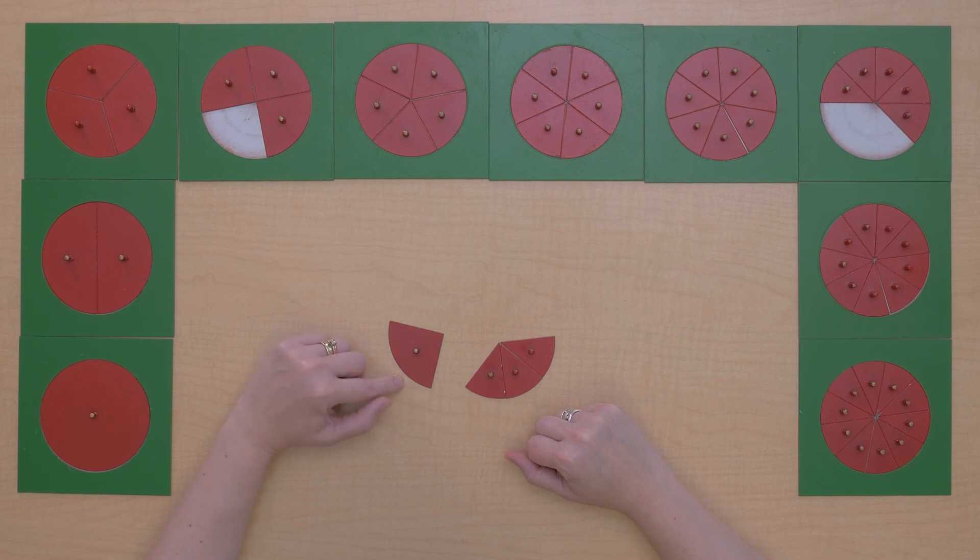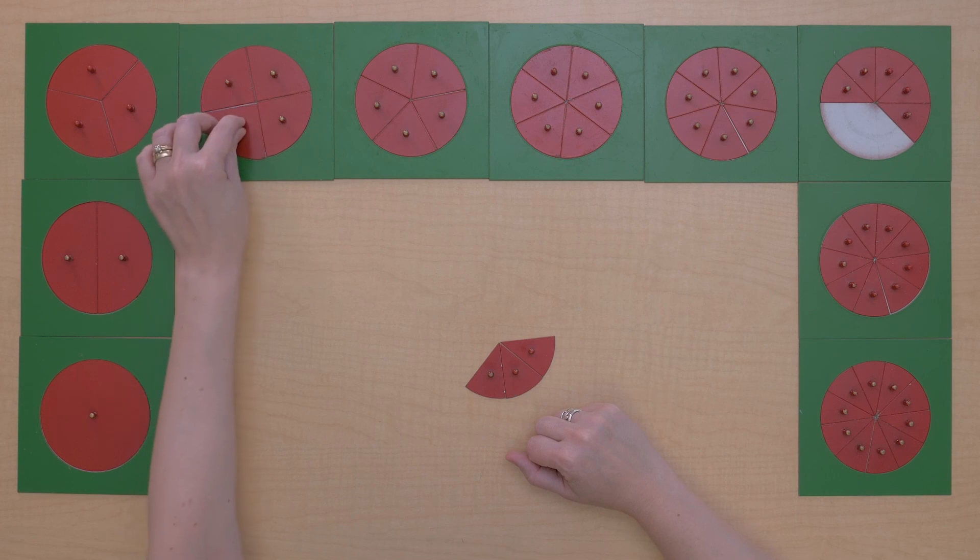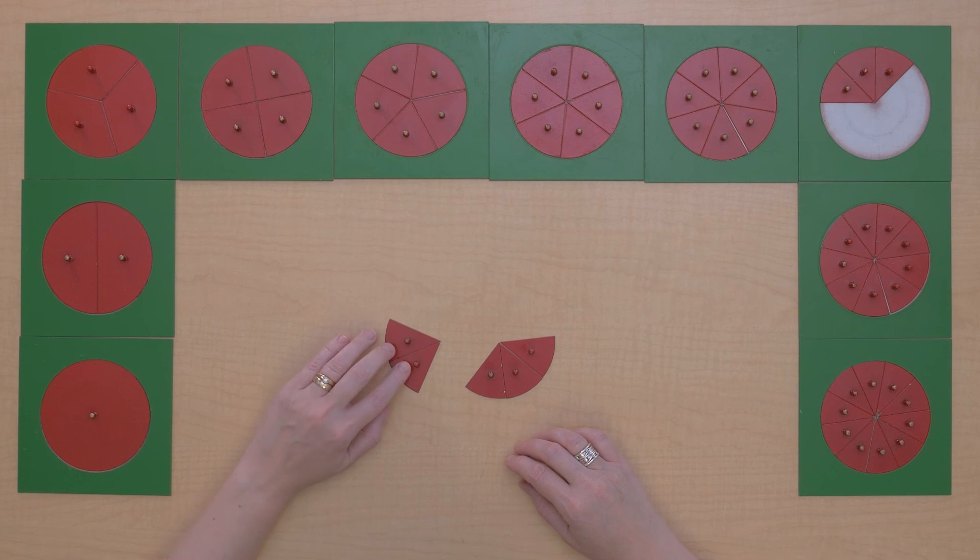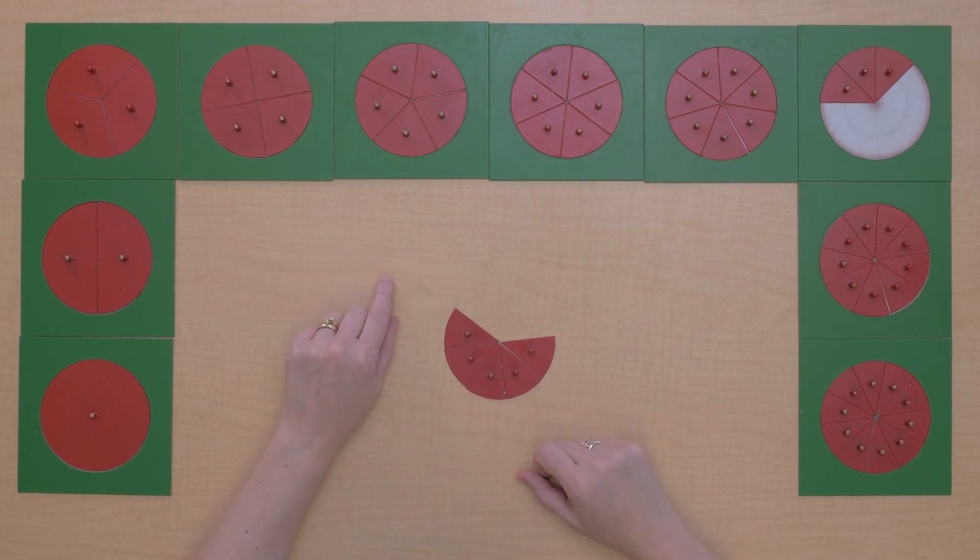One-fourth equals two-eighths. You're right, so let's exchange that for two-eighths. Now we can do our one-fourth plus three-eighths because we can put it together, and the answer is five-eighths.